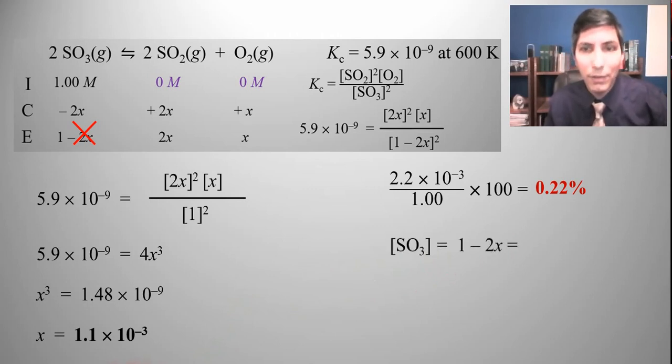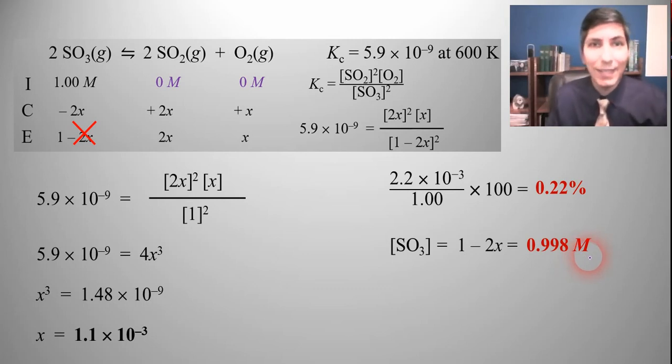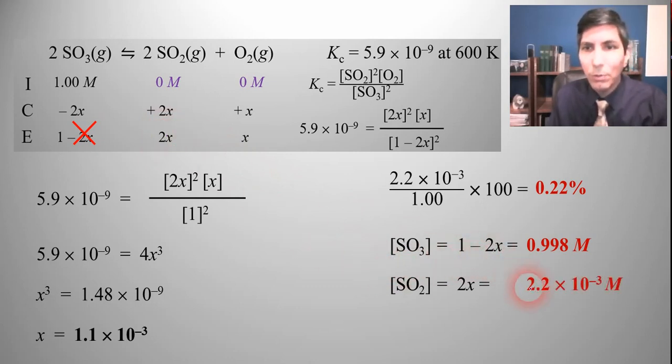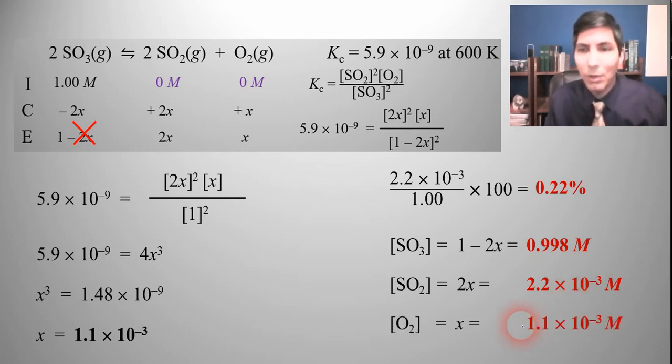So let's find the values of these. SO3 is 1 minus 2x so when I plug that in it's 0.998 moles per liter. So not a whole lot of the one molar reacted. And then sulfur dioxide is 2x so that's 2.2 times 10 to the minus third molar and oxygen is just x so that's 1.1 times 10 to the minus third molar. So we just had a nice shortcut here.